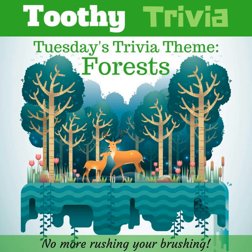The largest forest in the world is a boreal forest, also known as the taiga. The types of animals that you will find in a boreal forest can include moose, elk, reindeer, bears, beavers, wolf, weasels, otters, salamanders, and frogs.